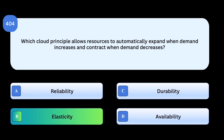Correct answer: Elasticity. Elasticity refers to the capability of scaling resources up and down automatically as workload demand changes. Why others are incorrect: Reliability ensures workloads run consistently. Durability focuses on long-term data persistence. Availability ensures uptime and accessibility, not scaling.